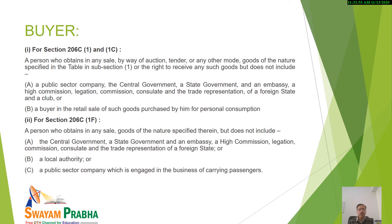Or who requires the right to receive any goods. But does not include — kindly note who is not included: a public sector company, central government, a state government, and an embassy, high commission. Also, a buyer in the retail sale of goods who has purchased the goods only for personal consumption — these will not be included.